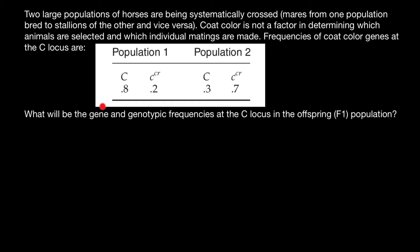Gene frequencies here means allelic frequencies. One more note before I show you the solution: I want to get rid of some of these letters, as they don't add anything to our calculations and just make them more complicated. We have essentially a dominant allele C and a recessive allele c at locus C, in population one and population two, with different frequencies of the dominant and recessive allele in each population.